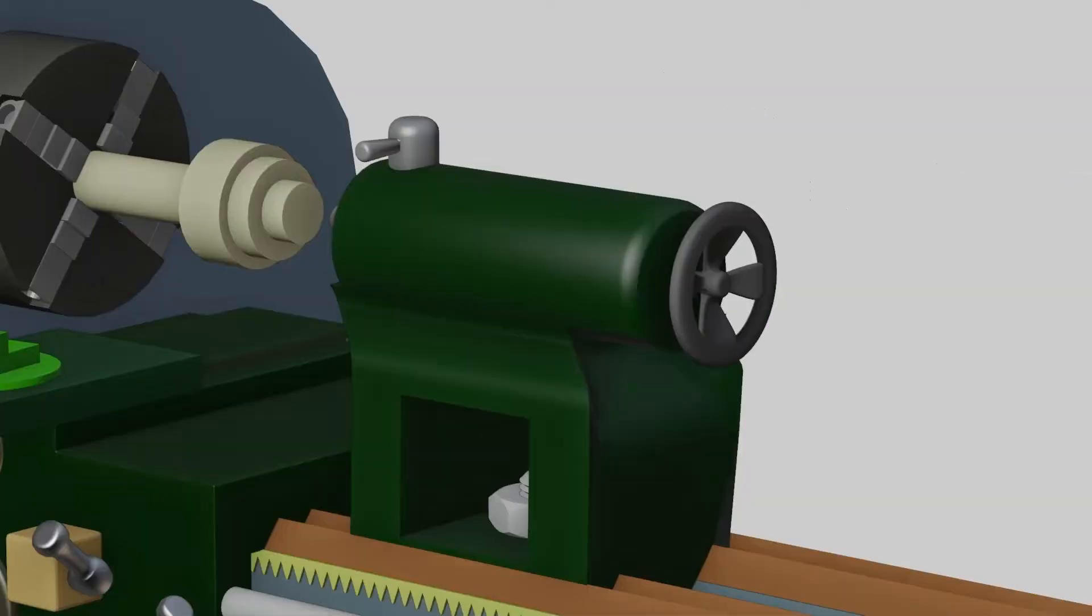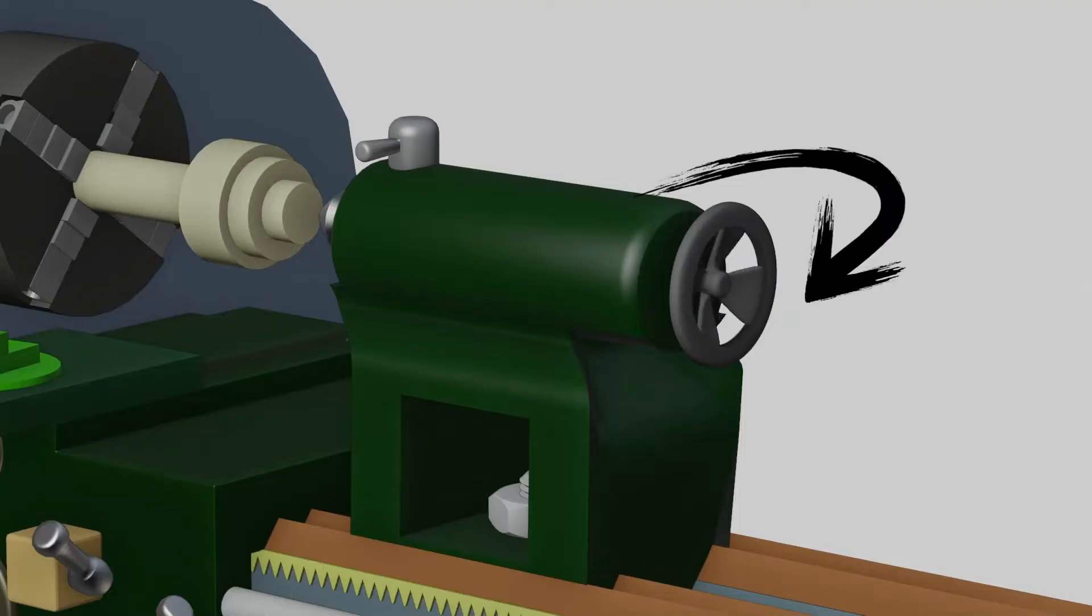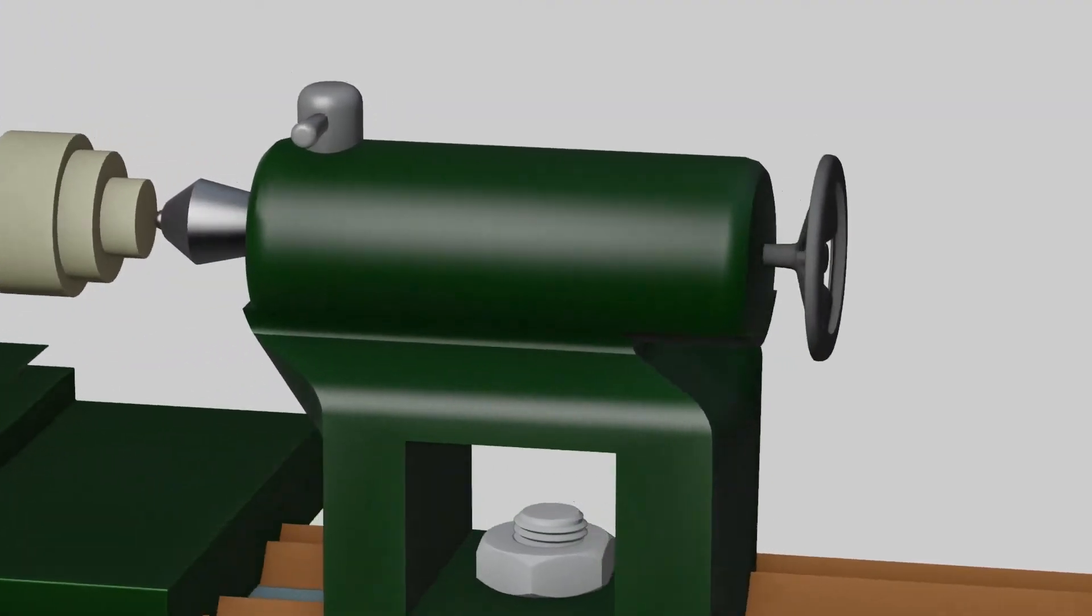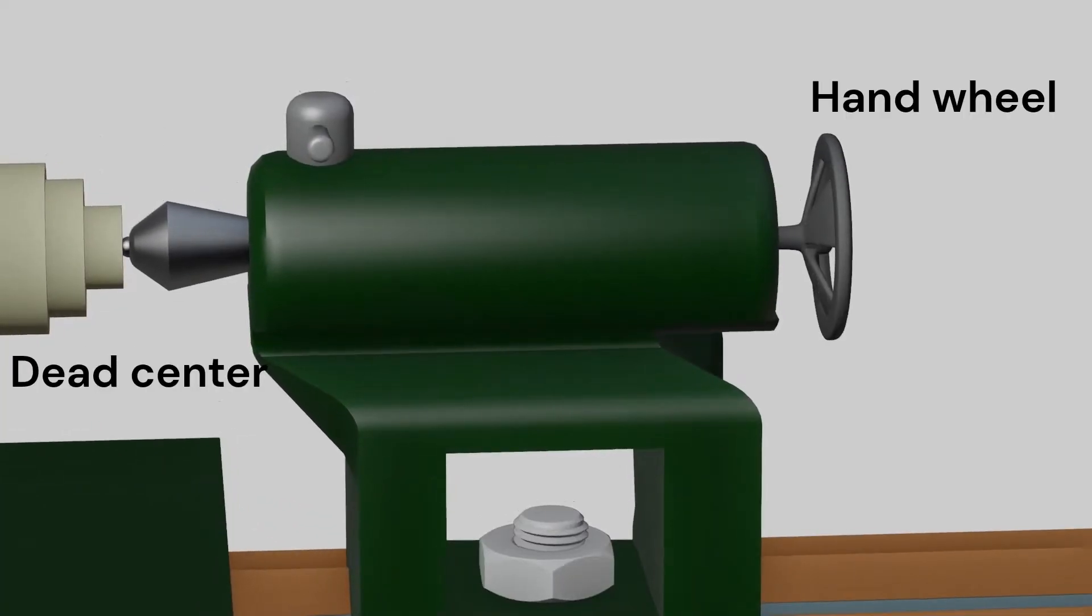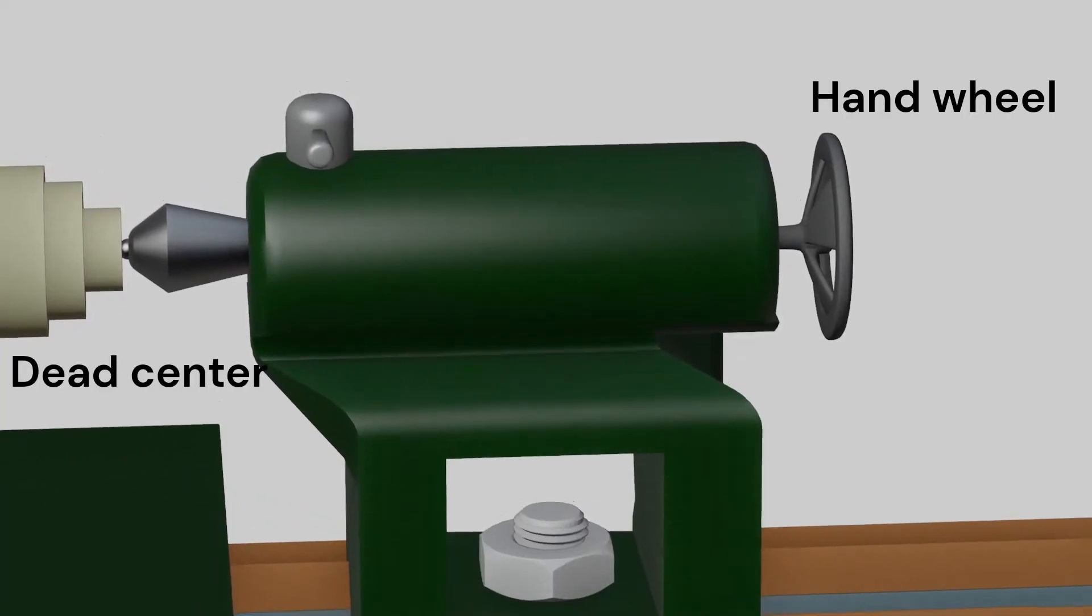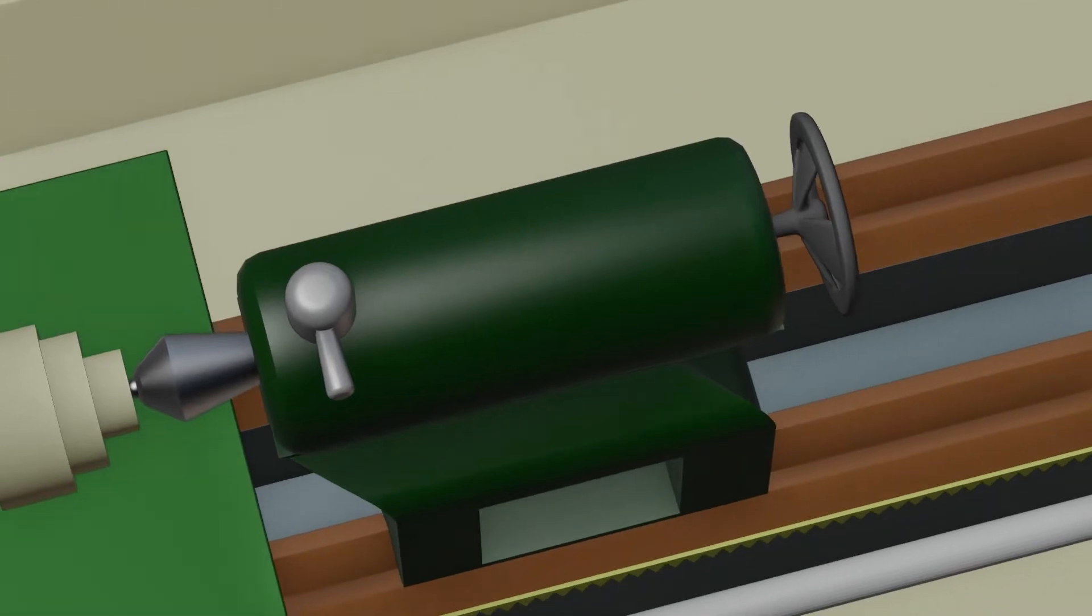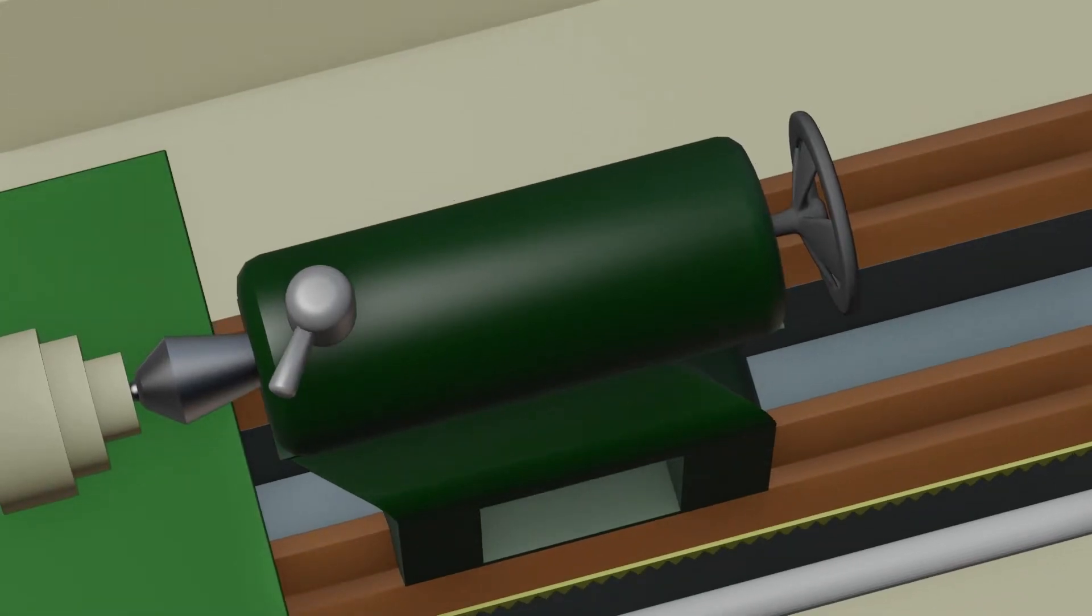For holding workpieces, we can move the dead center by rotating the hand wheel. To lock the dead center we pull that lever. Now the tailstock is fit to hold the workpiece.